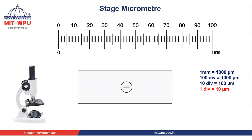So each division of this stage micrometer is 10 micrometers. The stage micrometer we are using has a one millimeter scale with 100 divisions, and each division is equal to 10 micrometers.